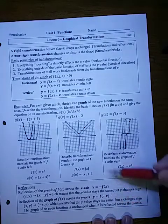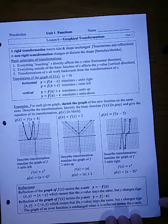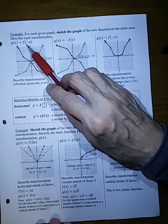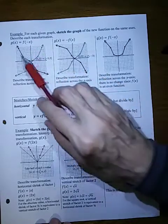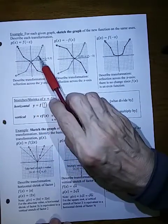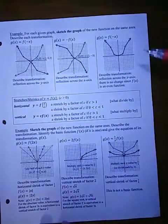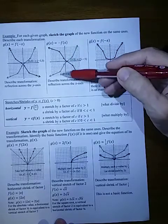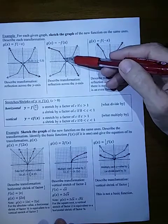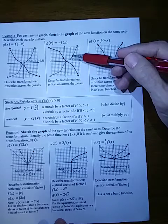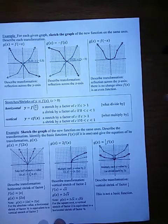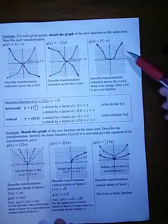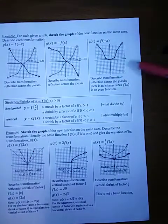Even functions will not change under the y-axis reflection because f of x and f of negative x are the same. For each given transformation, sketch the graph and describe it. g of x equals f of negative x is a reflection across the y-axis — whatever was at negative x moves to positive x. Negative f of x changes the sign of y, so whatever was up goes down at the same x value — that's a reflection across the x-axis. For even functions, reflecting across the y-axis produces no visible change.